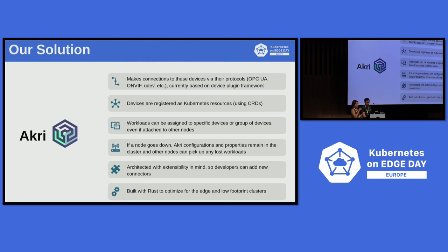I want to talk to you about Akri, which is our CNCF sandbox project. Akri stands for a Kubernetes resource interface — it also means Edge in Greek. This actually extends the device plugin framework to make connections to IoT leaf devices via protocols. For example, we have OPC UA, ONVIF, UDev, et cetera. It enables resource sharing by registering these as Kubernetes resources using custom resource definitions. Workloads can be assigned to specific devices or groups of devices, even if they're attached to other nodes. And it's built with Rust to optimize for the edge and low-constrained clusters and devices.